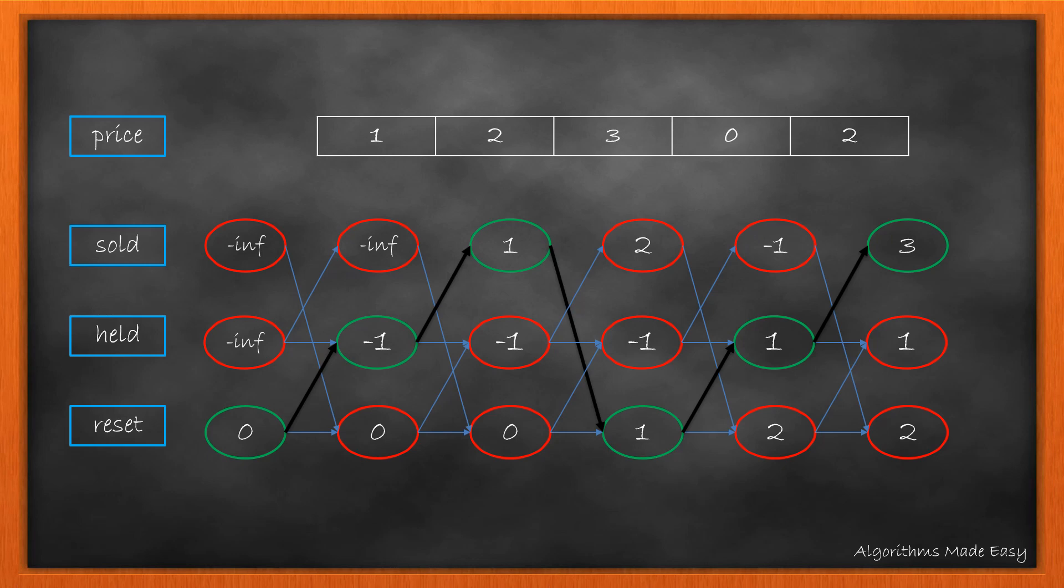When we look for the path which gives us the maximum profit, it is the same which has been explained in the question as well. The answer will be the max of sold and reset because at the end these two states are the only states an agent should be in. The agent cannot hold any stock after the last day. So this becomes our answer.